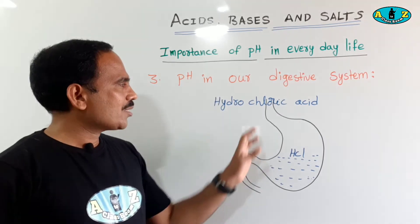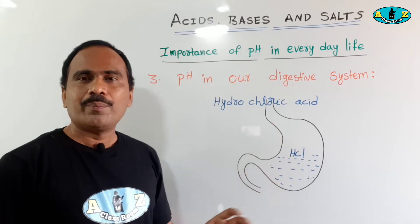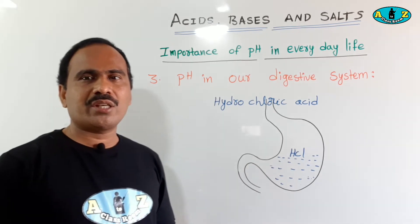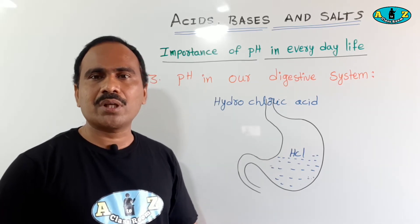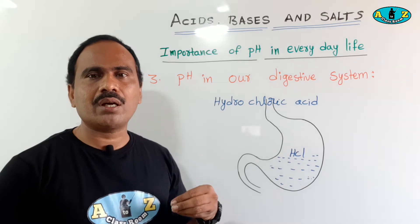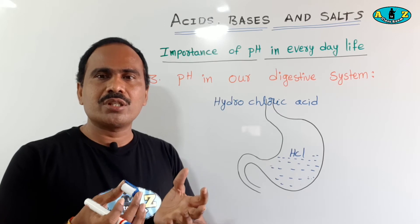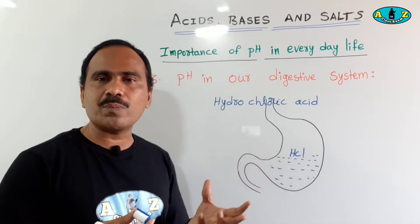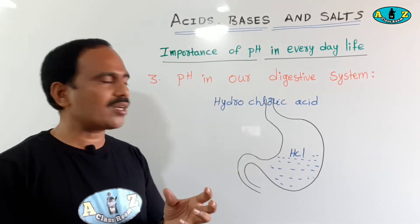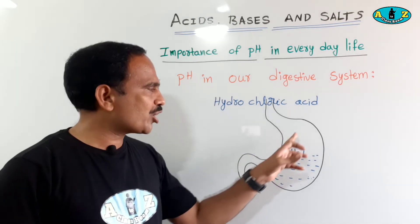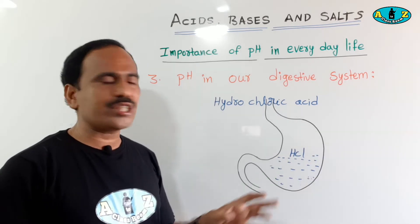But in the case of indigestion, the quantity of HCl produced is large. Our stomach produces a large quantity of HCl, and that large quantity of HCl causes pain and irritation of the walls of the stomach.